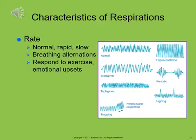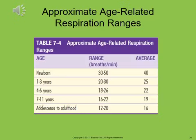Respiration characteristics can be normal, rapid, or slow. Dyspnea occurs in patients with pneumonia, asthma, or chronic obstructive pulmonary disease (COPD), and after physical exertion or at very high altitudes. Other alterations in breathing are bradypnea, apnea, tachypnea, and hyperpnea. This table shows the approximate age-related respiration ranges.